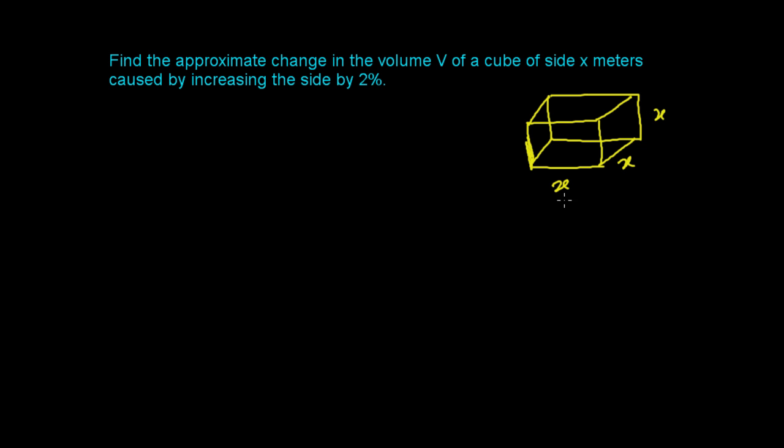So at that time the volume was, the volume V was L into B into H, that's x³. And what are we going to do? We're going to increase the side.